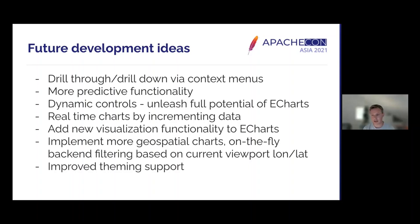Of course, we'll keep adding new visualizations. We now have around nine eCharts core visualization types, but we're going to keep adding more. One area I'm really excited about is geospatial charts — eCharts offers a lot of great geospatial chart types that would be very nice to implement in Superset. We're also looking at dynamic filtering based on the viewport, so when you drill down into a map, that could trigger a new query adding filters for the visual bounds.